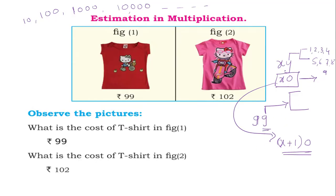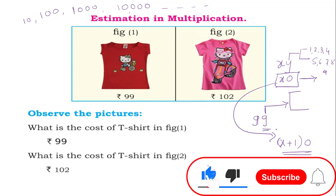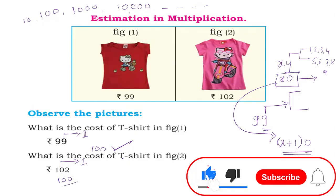Similarly, we can estimate for 100, 1000, etc. Here, 99 appears in the second case. Add 1 to the tens digit: 9 plus 1 is 10. Put 0 in the unit digit. The tens place carries over, so the 100 place increments. Estimation to 100 gives the answer 100.